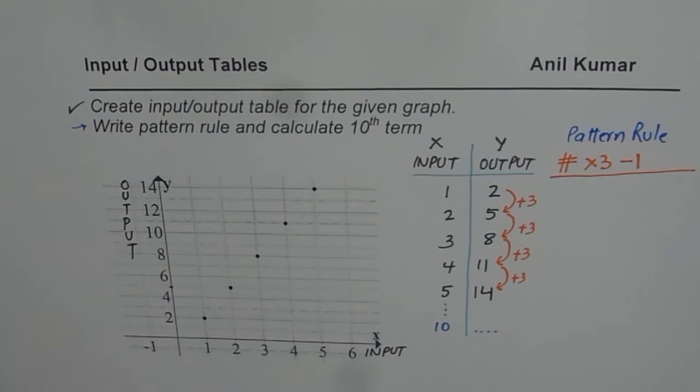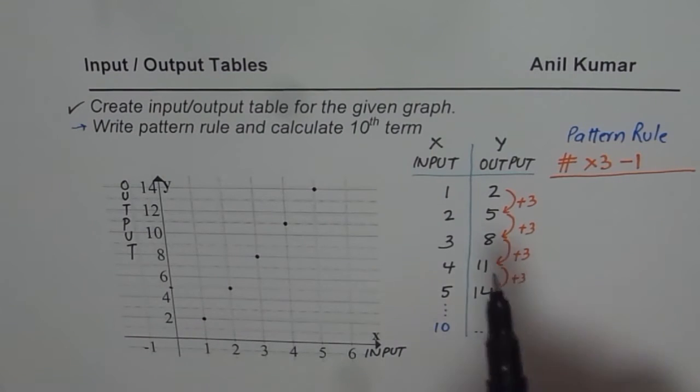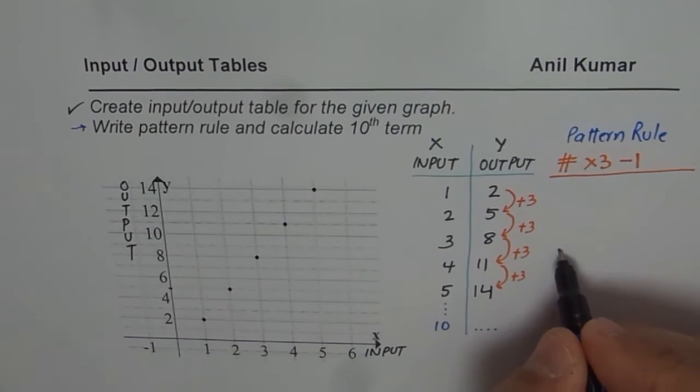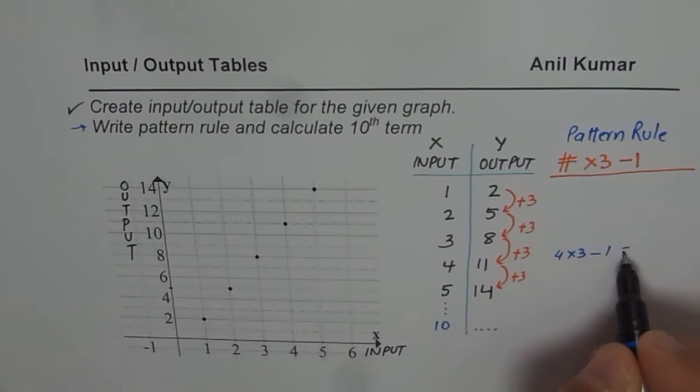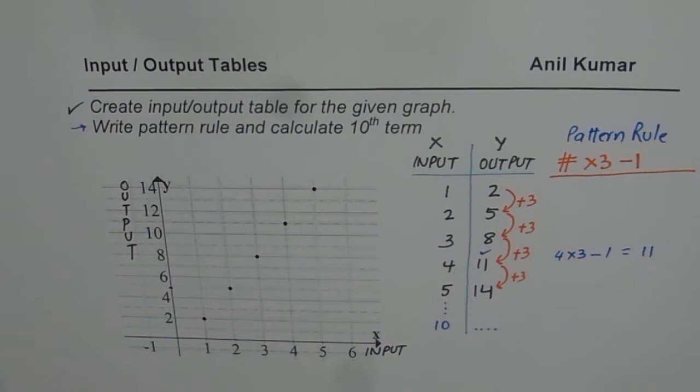Now, what you can do is, you can just check for yourself. If I do 4 times 3, let me check. 4 times 3 minus 1. 4 times 3 is 12. 12 minus 1 is 11. Perfect. So it works.